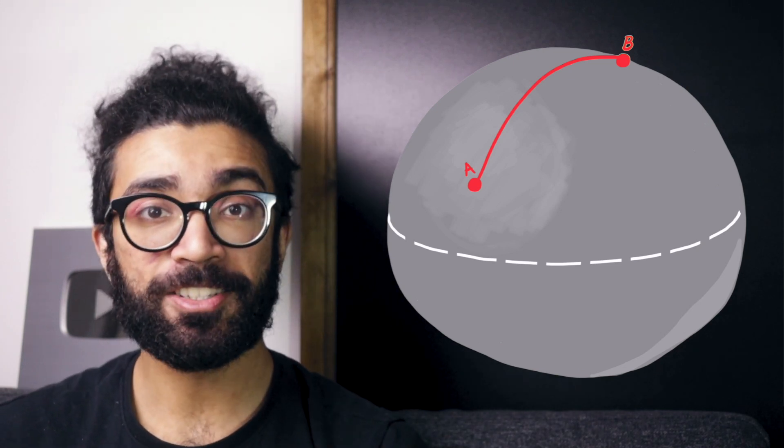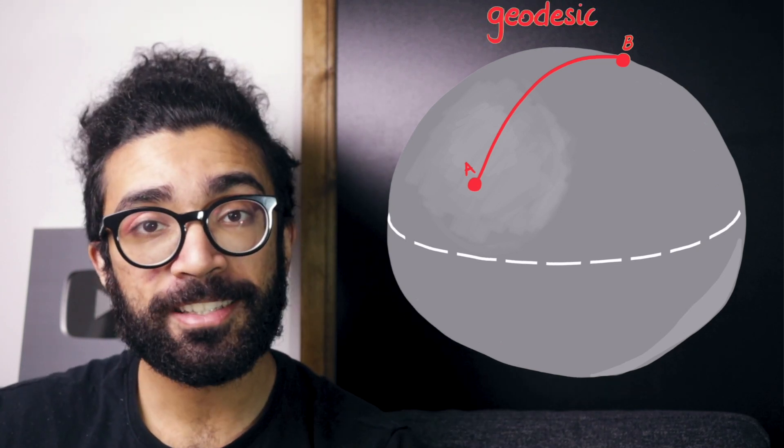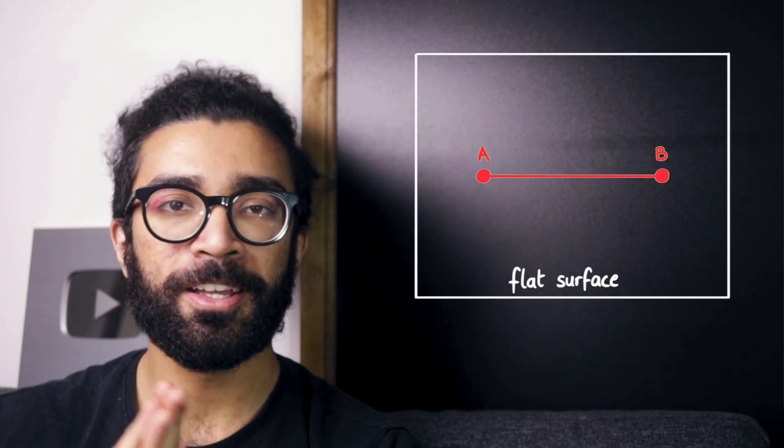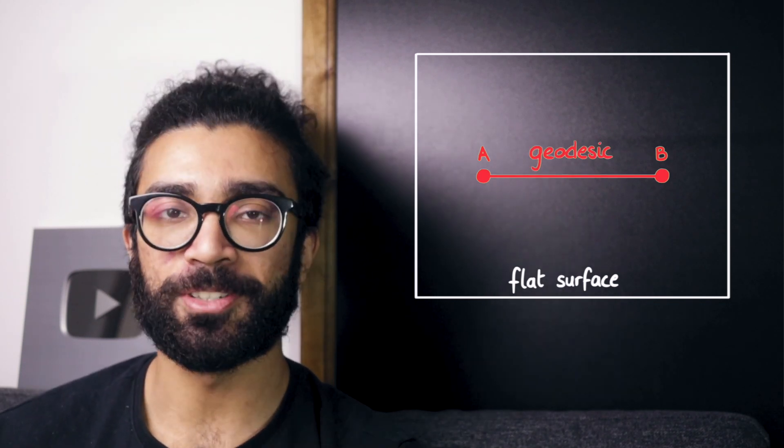What this is known as is a geodesic. A geodesic is basically just the shortest distance between two points on a given surface, and technically the path that we saw earlier on a flat surface between points A and B, the straight line path is also a geodesic.